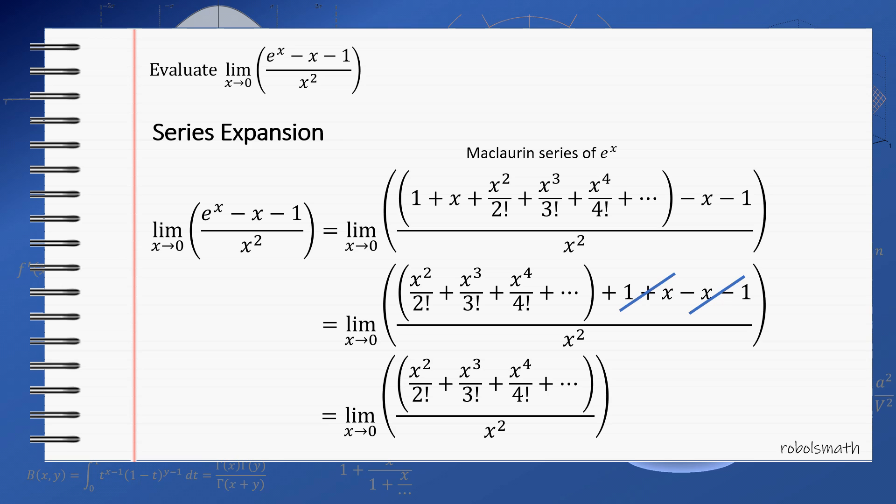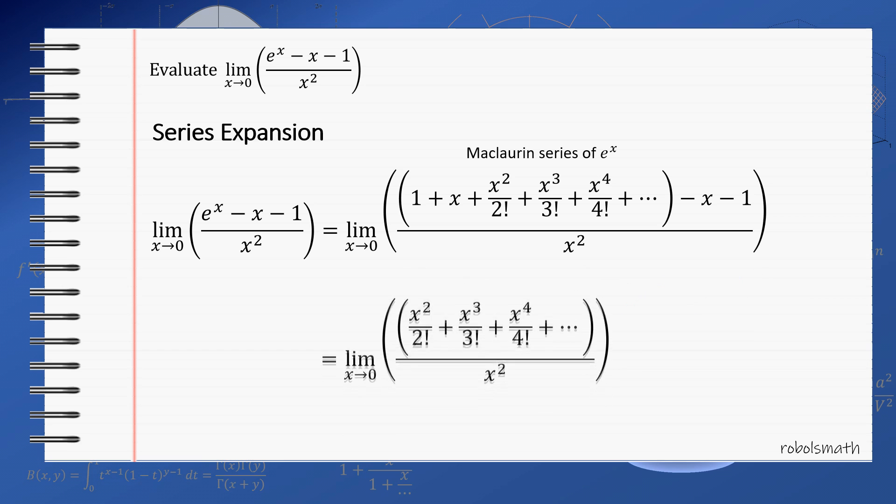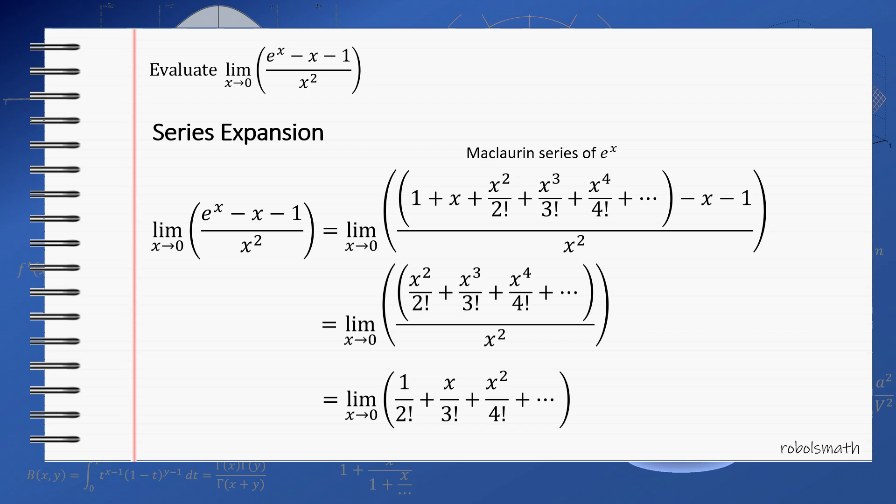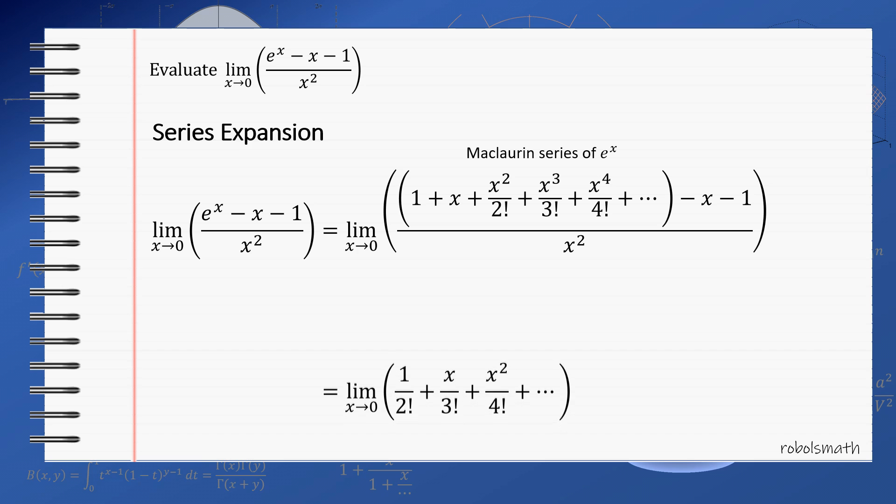Again, if you notice, each of the powers in the numerator has at least x squared as a factor. Therefore, the x squared in the denominator cancel out, thus leaving us with an expression that is 1 over 2 factorial plus x over 3 factorial plus x squared over 4 factorial and so on. If we evaluate this at x equals 0, every term except 1 over 2 factorial is equal to 0, thus making the limit equal to 1 half, which is aligned to what we got previously.